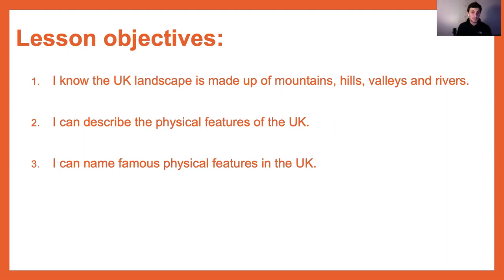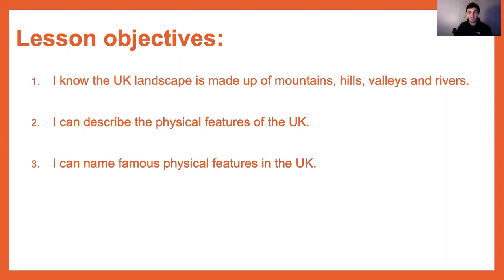Our learning objectives for today are that we know the UK landscape is made of mountains, hills, valleys, and rivers; that we're able to describe the physical features — physical features being the keyword — of the UK; and that you're able to name physical features in the UK.